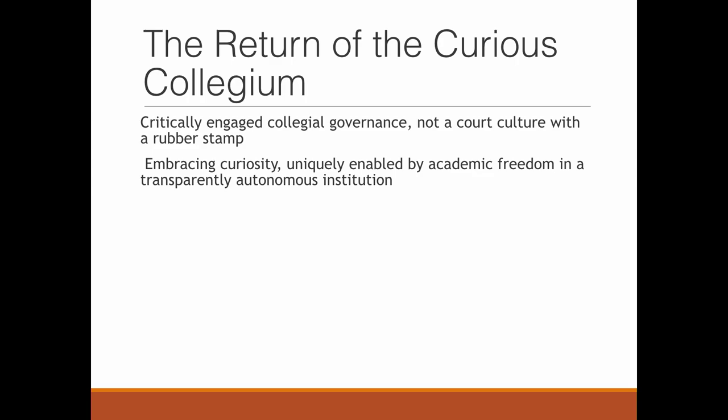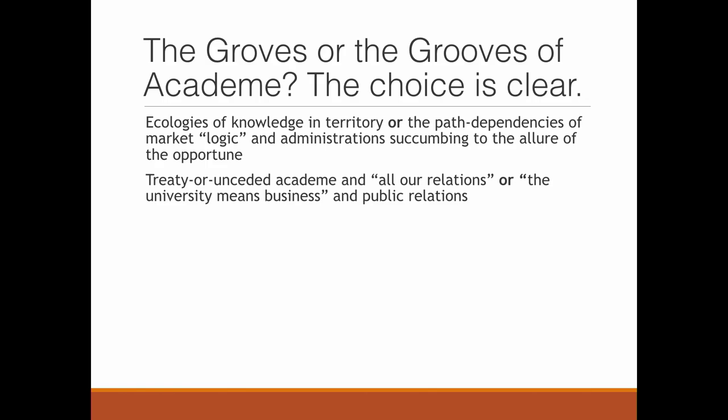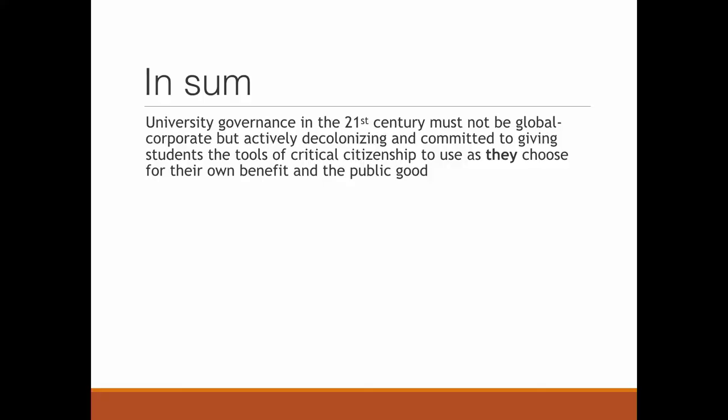So the question is, is it the groves of academe or the grooves of academe? For me, the choice is clear. Either we need ecologies of knowledge and territory, or we have the path dependencies of market logic and administrations succumbing to the allure of the opportune. The treaty or unceded academy and all our relations, or the university means business and public relations. In sum, university governance in the 21st century must not be global corporate, but actively decolonizing and committed to giving students the tools of critical citizenship to use as they choose for their own benefit and the public good. Thank you very much for your attention.